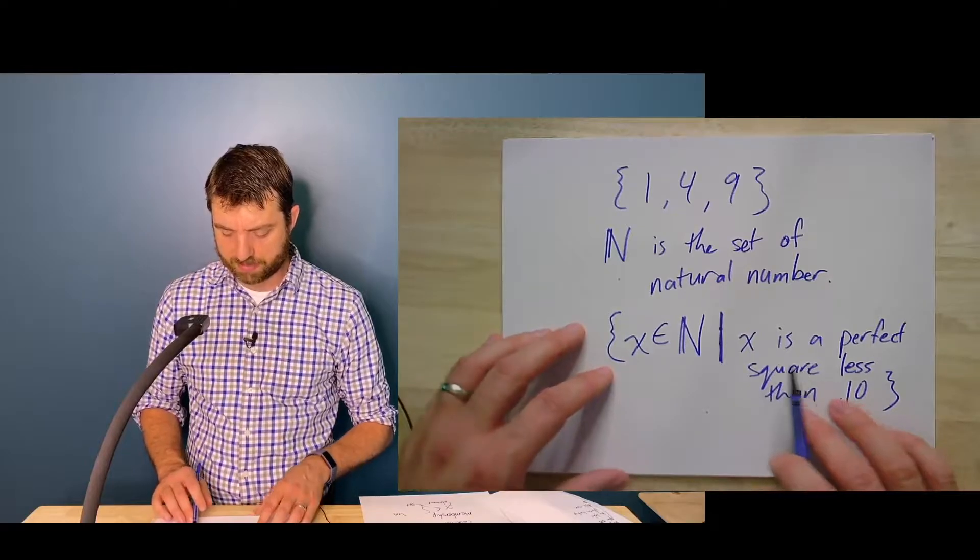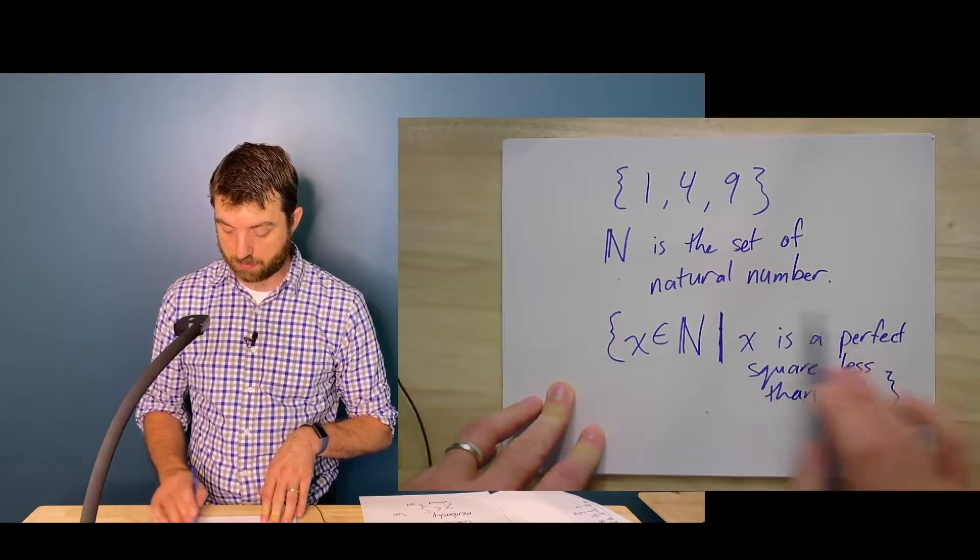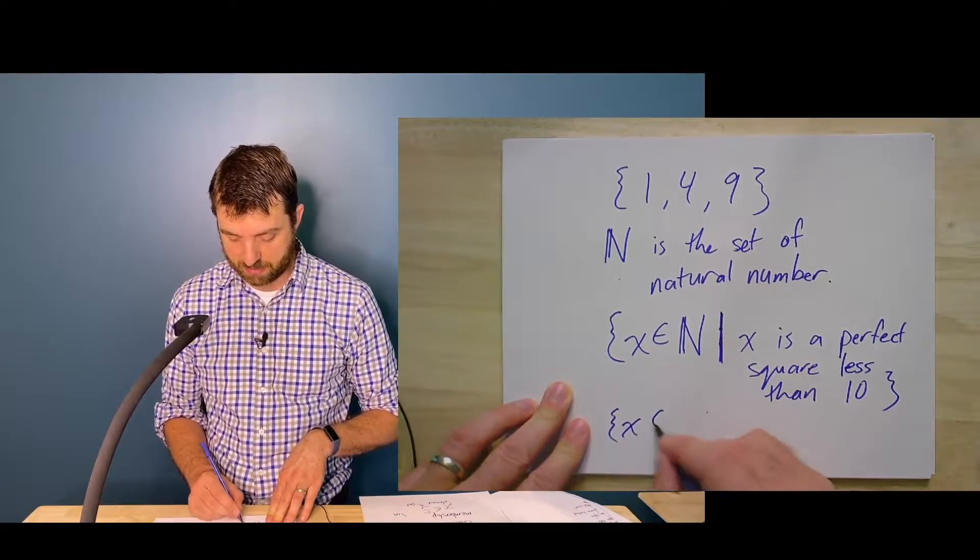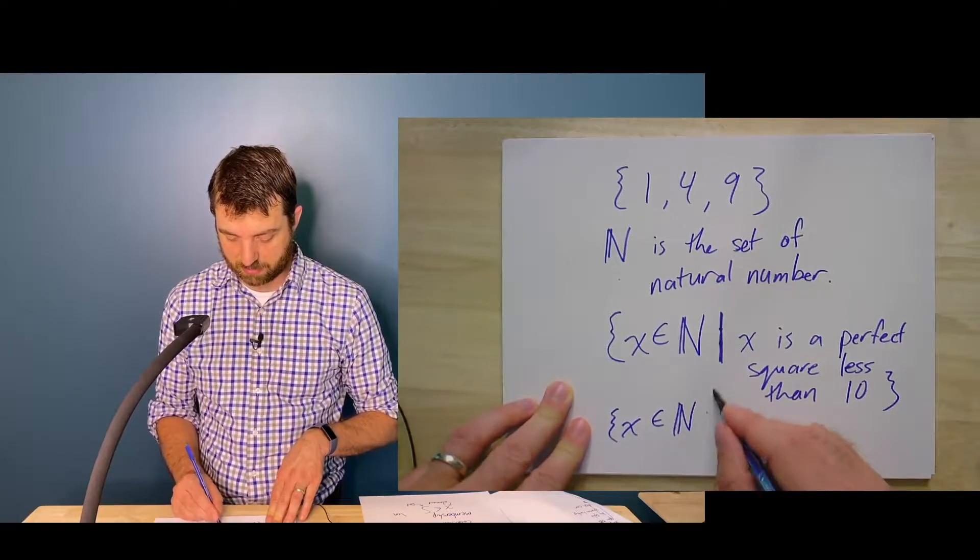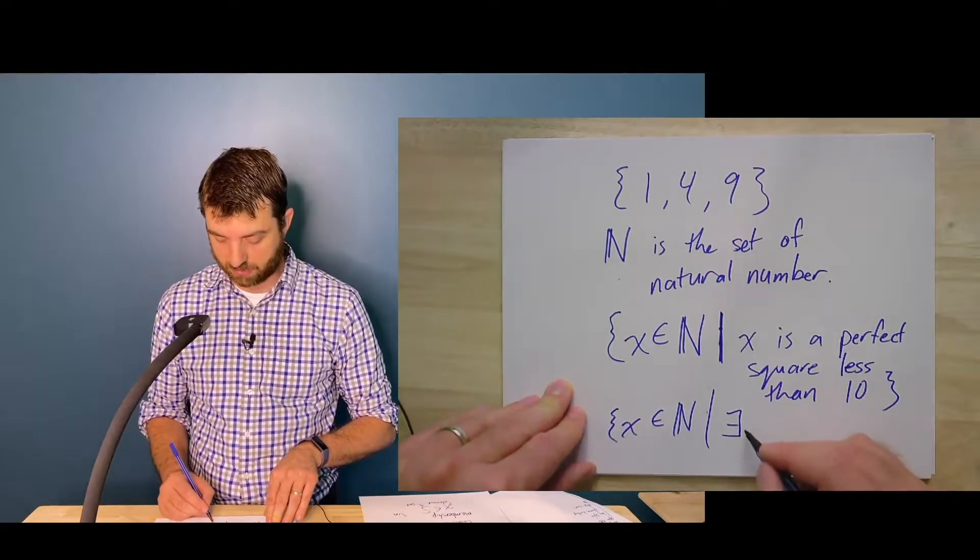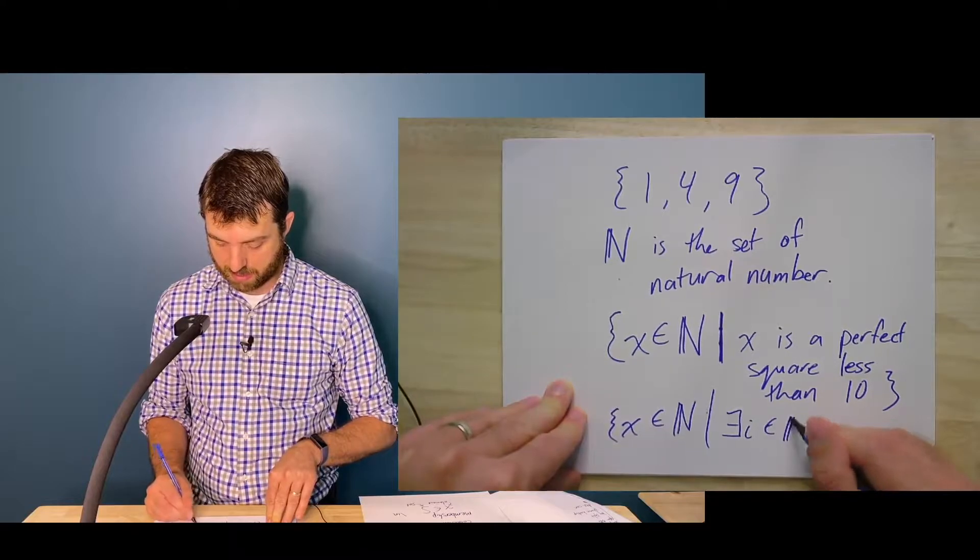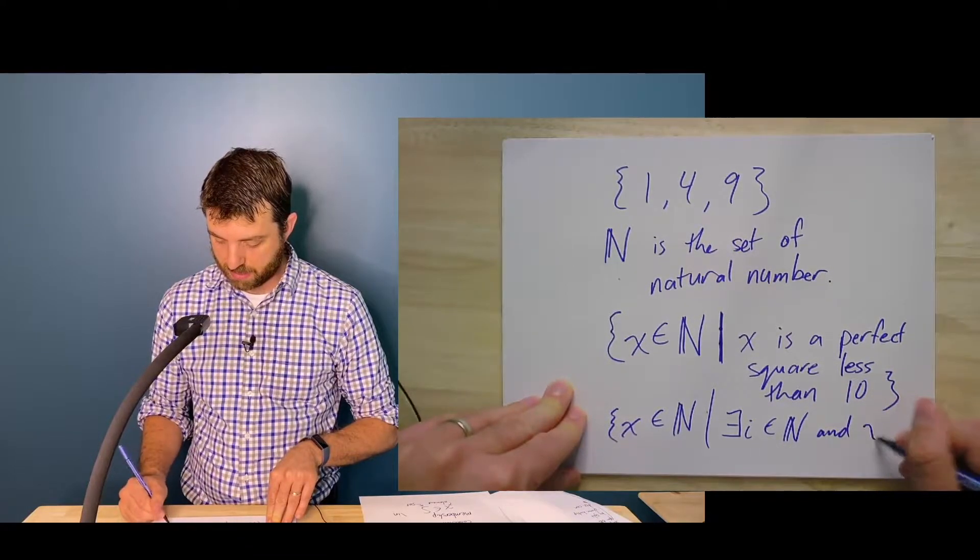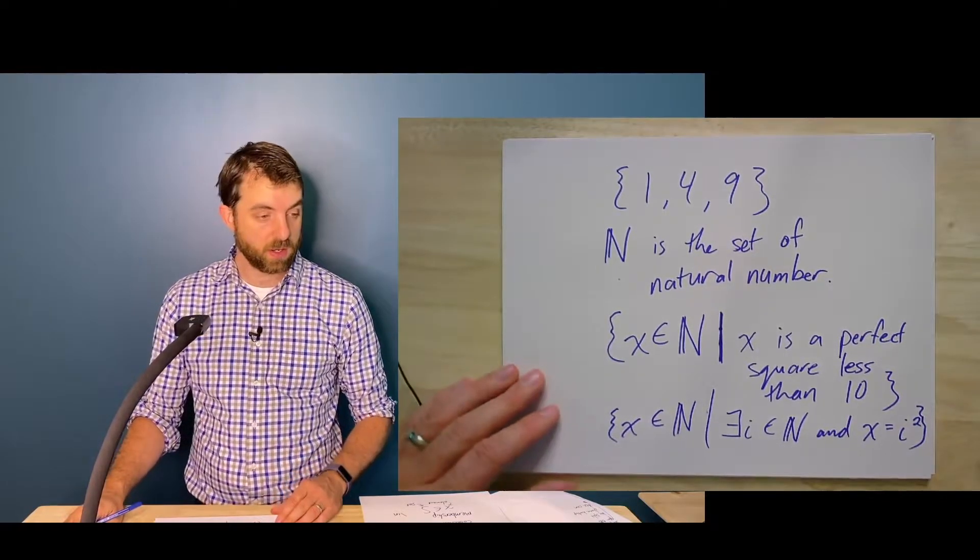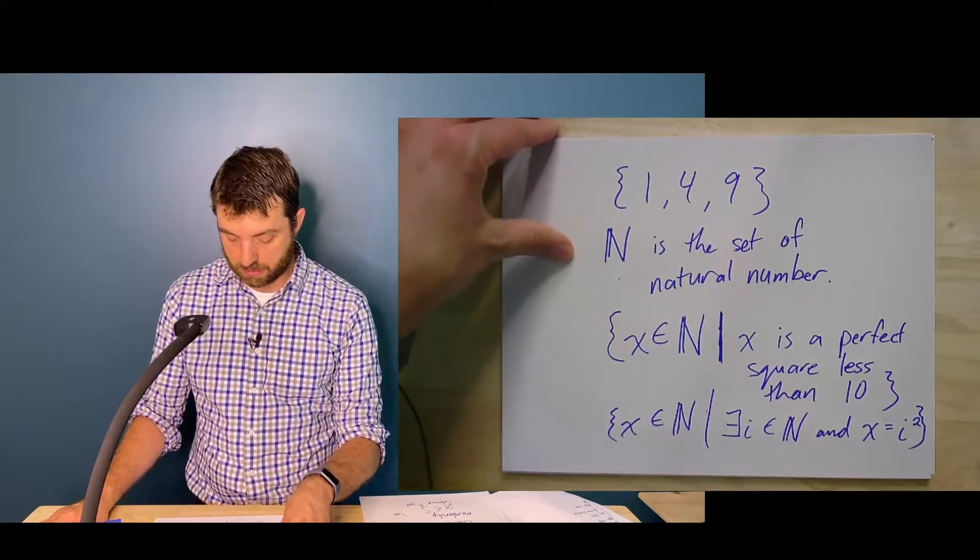And so if I want to make this a little bit more formal, I might try to write this predicate in a mathematical notation. So I might write something like set of all X in natural numbers such that there exists I in N, and X equals I squared. So these are just a bunch of different ways of writing a set.